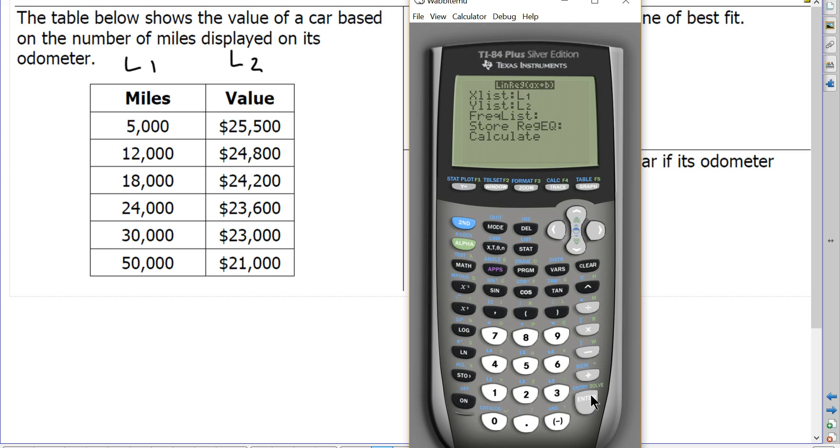So I'm going to choose number 4, and yes, my x values are in list 1. Press enter. Yes, my y values are in list 2. Press enter. I don't need any of these other features right now, so I'm just going to press enter until I get my information. The information shown here is that the coefficient in the a position is negative 0.1, and that the value of the y-intercept in the b position is 26,000.